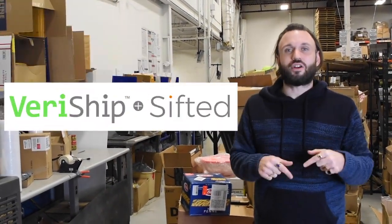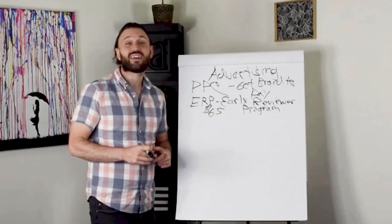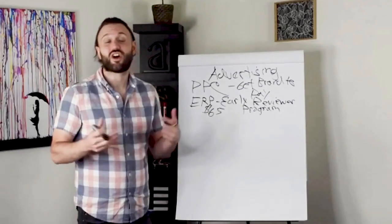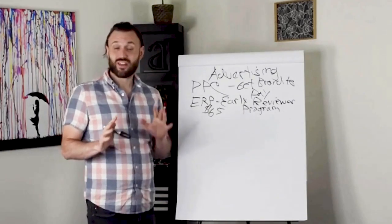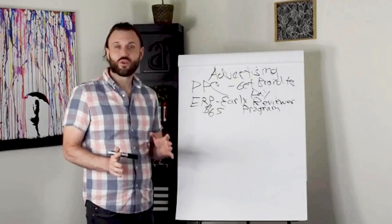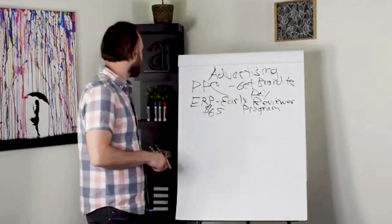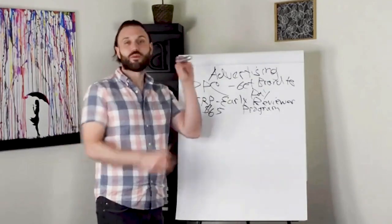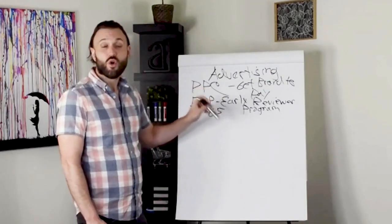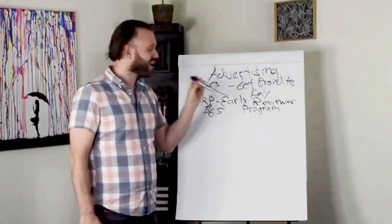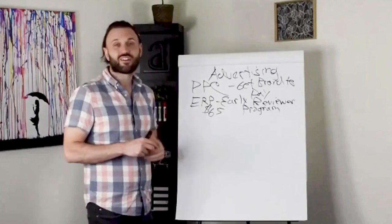So what the early reviewer program does is incentivizes buyers to leave customer reviews. Now, you don't have a say in whether they leave a good review or a bad review. But what Amazon does is, let's say someone buys a product, someone buys this Sharpie marker on Amazon that's enrolled in the early reviewer program.